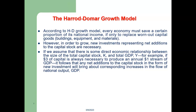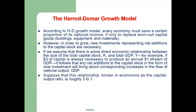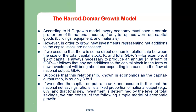— for example, if $3 of capital is always necessary to produce one dollar's worth of annual GDP, it follows that any net addition to the capital stock in the form of new investment will bring about corresponding increases in national output. This relationship is known as the capital output ratio. We define the capital output ratio as C, the net national savings ratio as S — a fixed proportion of national output, say 6% — and total new investment as determined by the level of total savings. We can then construct the following model of economic growth.